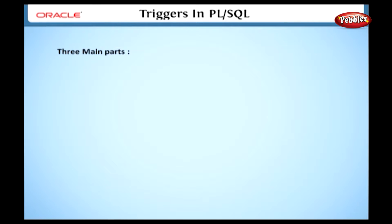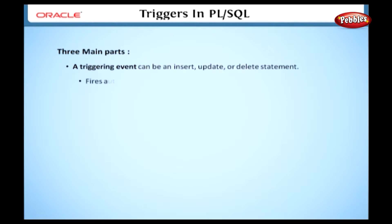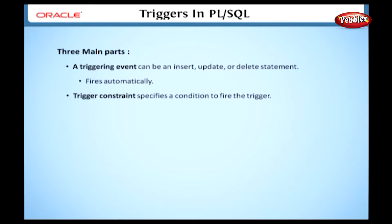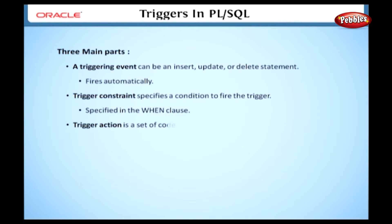Here are the three main parts of a trigger. A triggering event can be an Insert, Update, or Delete statement — the trigger fires automatically when any one of these events occurs. A trigger constraint specifies a condition that must be true for the trigger to fire, and this condition must be specified in the WHEN clause. The trigger action is a set of code to be executed when the trigger fires.